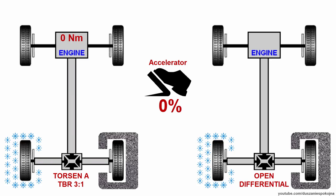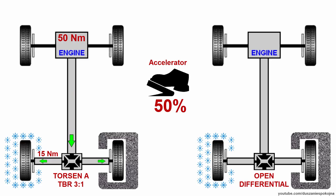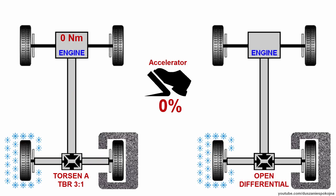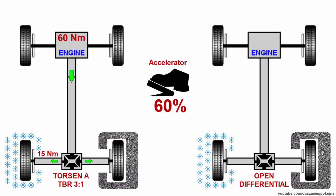Let's press the accelerator pedal harder, like 50%, so 50 Nm go to the back — 15 still goes to the wheel on snow and 35 to the wheel on tarmac. Now you press to 60% and you still have traction: 15 go to the left and 45 to the right, 60 in total.